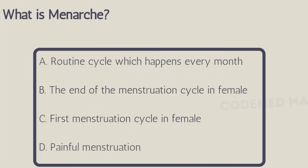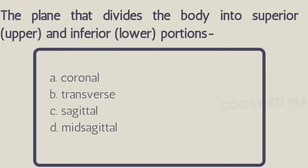Next question: what is menarche? Option A: routine cycle which happens every month, Option B: the end of the menstruation cycle in females, Option C: first menstruation cycle in females, Option D: painful menstruation. The right answer is Option C, first menstruation cycle in females.